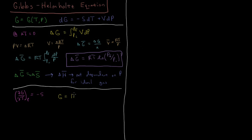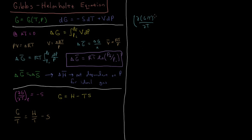Remember that G can be defined as enthalpy minus temperature times entropy. Dividing both sides by temperature and rearranging gives G over T equals H over T minus S. Now let's take the quantity G over T and differentiate it with respect to temperature at constant pressure.